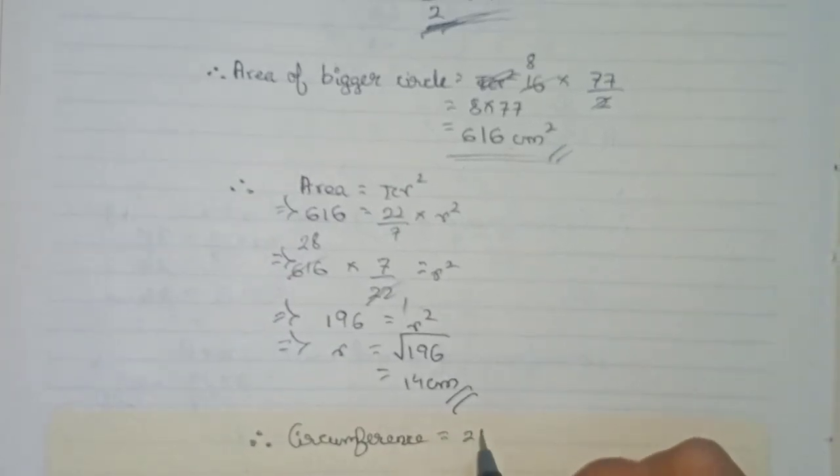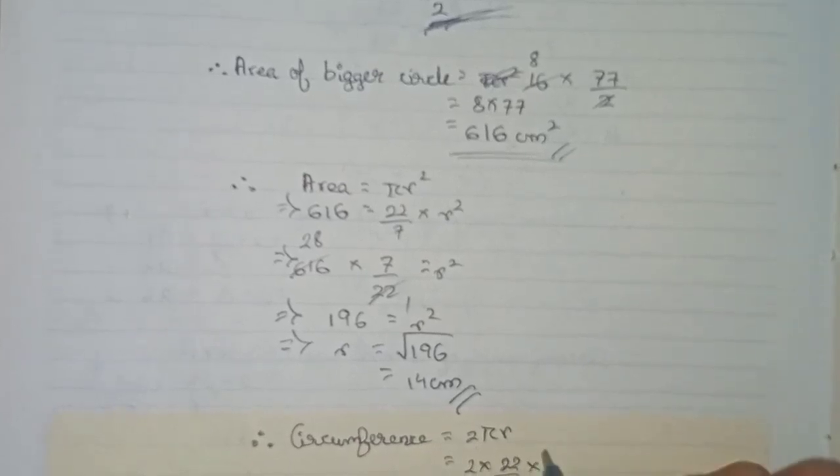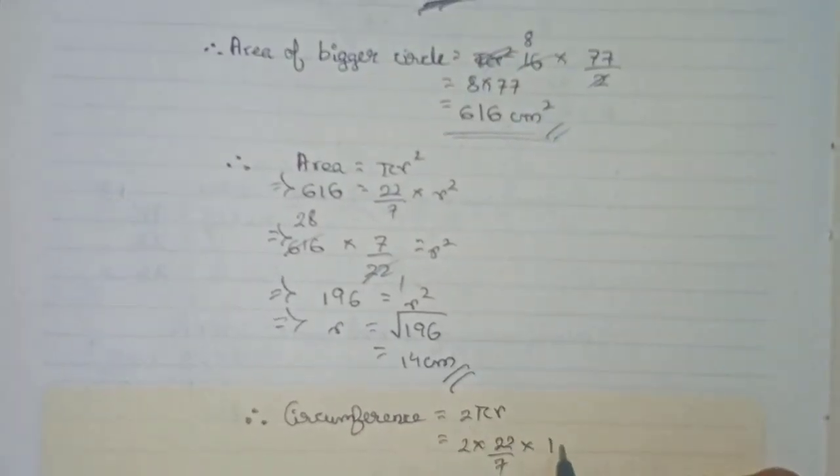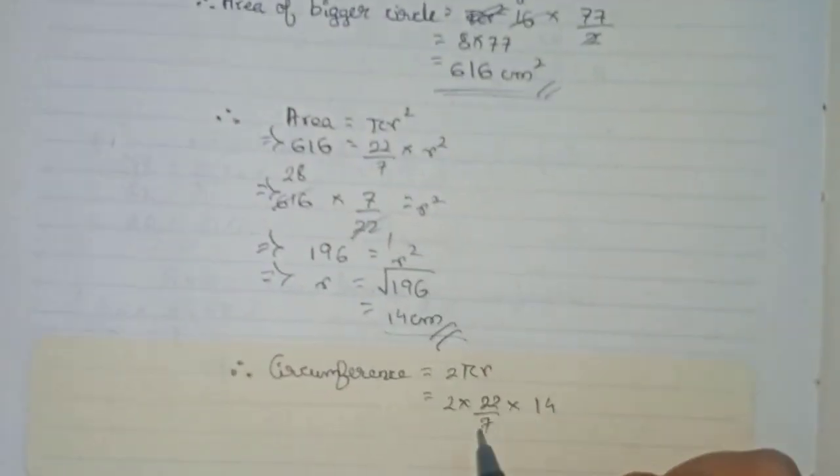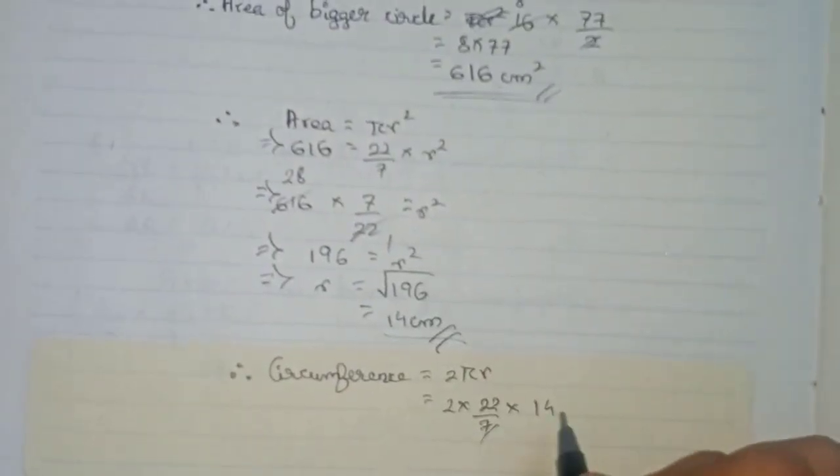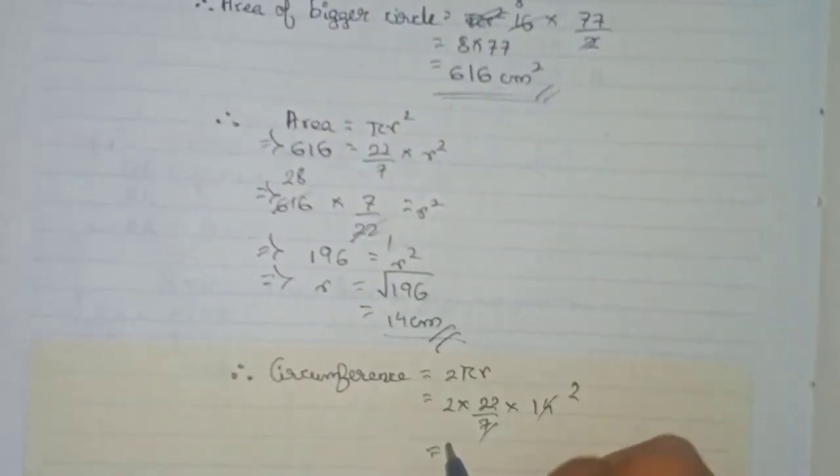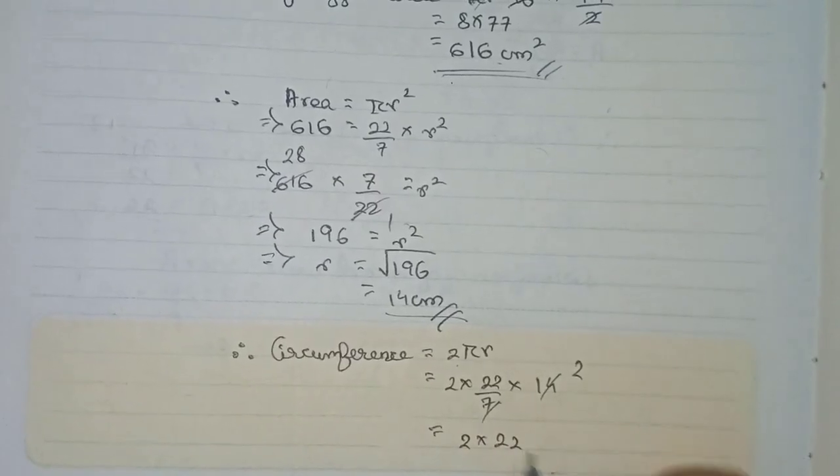So 2 into 22 by 7 into the radius, that is 14 centimeter. So 7 and 14 will cut out 2, so 2 into 22 into 2.